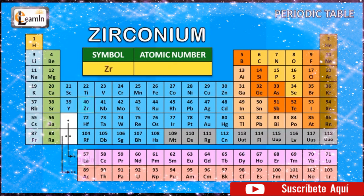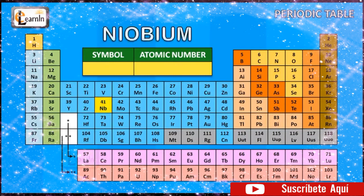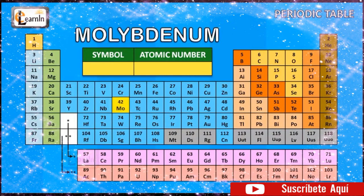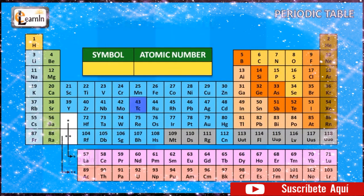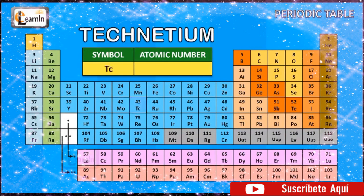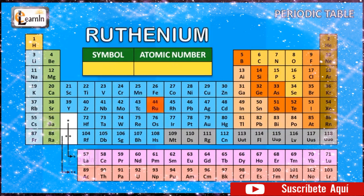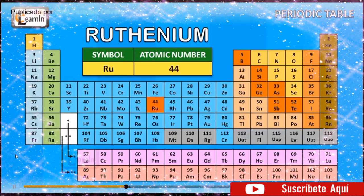The element niobium is represented as Nb and has an atomic number of 41. The element molybdenum is represented as Mo and has an atomic number of 42. The element technetium is represented as Tc and has an atomic number of 43. The element ruthenium is represented as Ru and has an atomic number of 44. The element rhodium is represented as Rh and has an atomic number of 45.